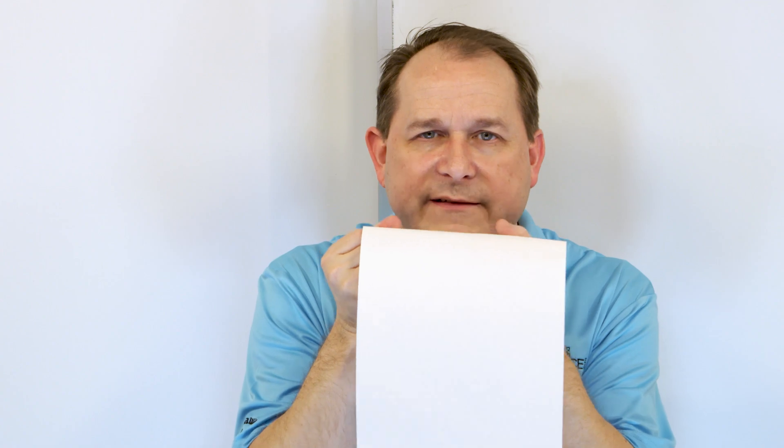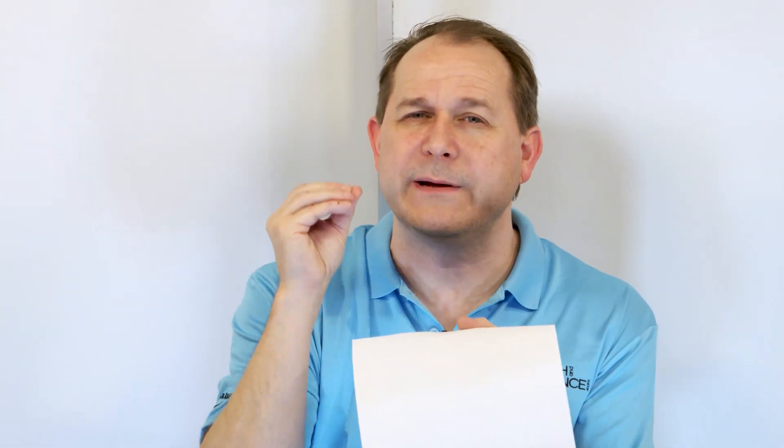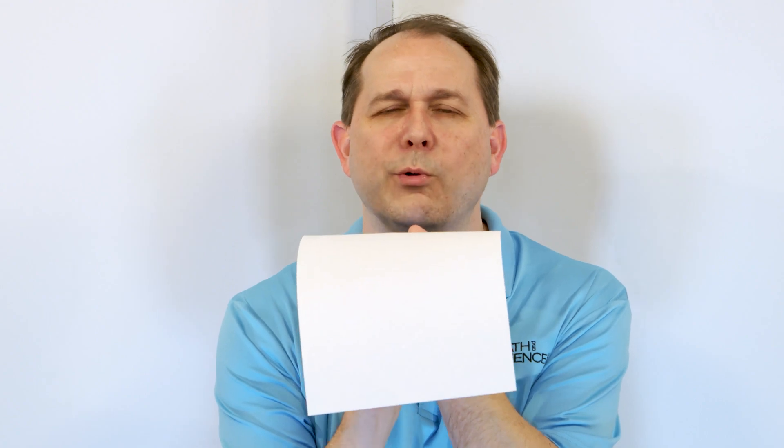When I blow across the top, I'm creating lower pressure. Remember the Bernoulli principle: when the velocity of the fluid flow goes faster, the pressure goes down. So there's a lower pressure on top, but the underside has no moving air at all, so normal atmospheric pressure is on the bottom. Low pressure on top, high pressure on the bottom means it gets pushed up.